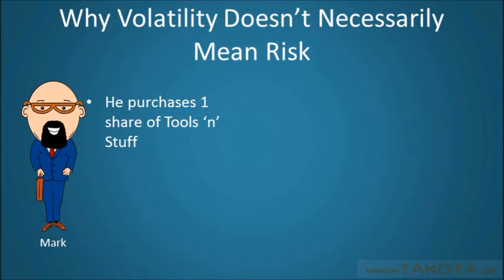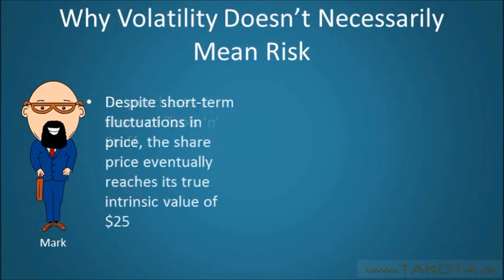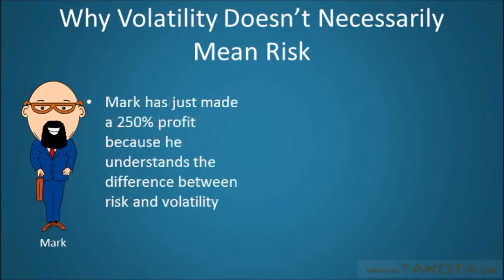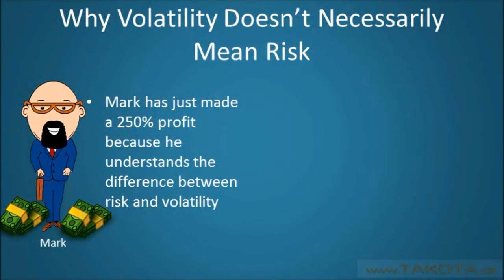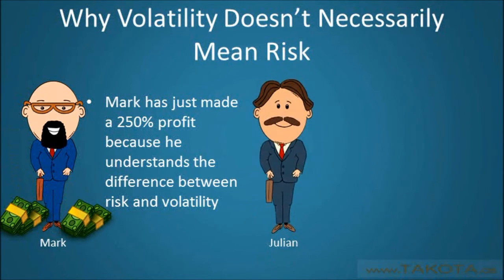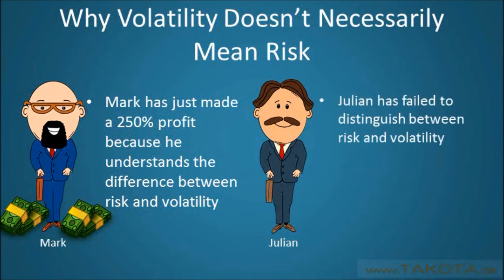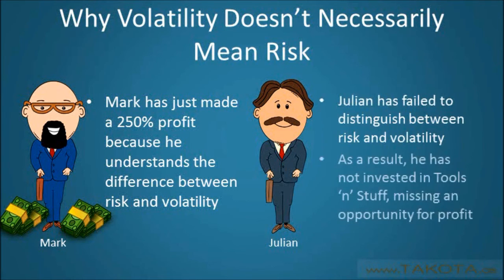Mark is confident in his valuation of the company and understands that high volatility does not necessarily equate to high risk. As a result, he purchases one share of Tools & Stuff for $10. In spite of short-term fluctuations, the share price eventually reaches its true intrinsic value of $25. Mark has just made a profit of 250% because he understands the difference between risk and volatility. Meanwhile, Julian has failed to distinguish between risk and volatility and as a result has decided not to invest in Tools & Stuff, squandering an opportunity for profit.